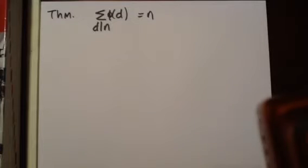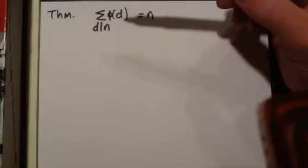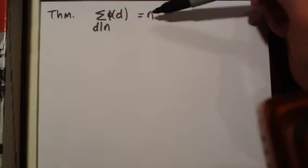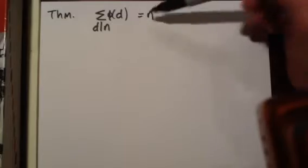Now let's prove a theorem that states the sum of Euler's phi function applied to every divisor of any number n is again n.